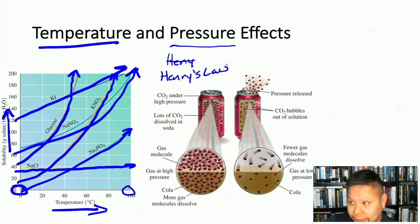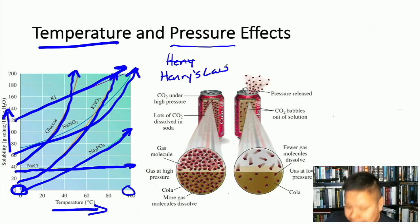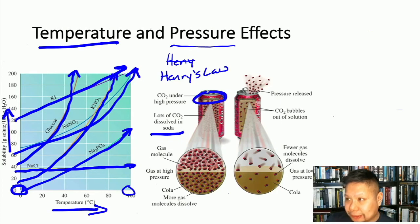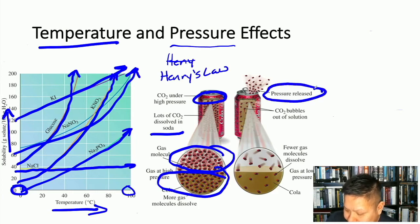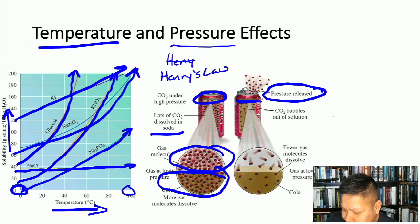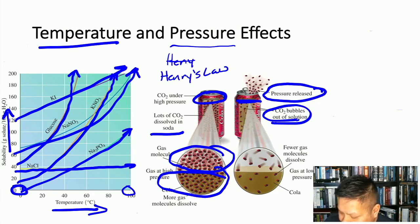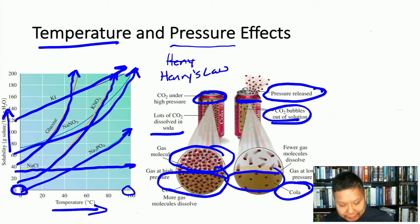Pressure can also affect the solubility of gases, based on Henry's Law: the solubility of a gas is directly related to the pressure of that gas above the liquid. A Coke can is a good example — when sealed, high CO2 pressure keeps lots of CO2 dissolved in the soda. When you crack it open and release the pressure, the CO2 is no longer soluble and bubbles up.